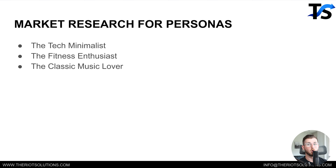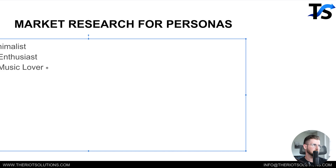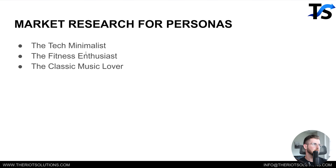Now, market research for personas. We found our desires — now we're going to look at our personas, the different types of people across our market that fit our product. I identified three, and to be honest, I used ChatGPT to generate these personas quickly because I didn't have time to go super deep into the iPod personas, but I thought these were pretty close: the tech minimalist, the fitness enthusiast, and the classic music lover. I'm not sure about that last one, but definitely the tech minimalist and fitness enthusiast are solid. Classic music lover is about 50-50.